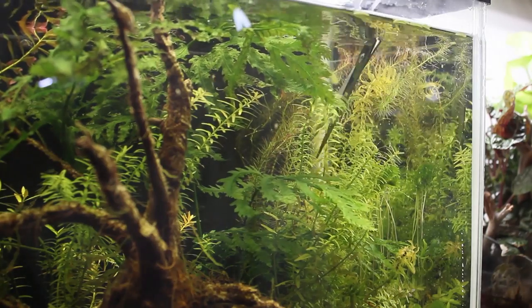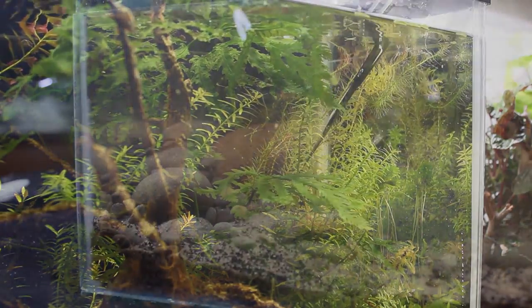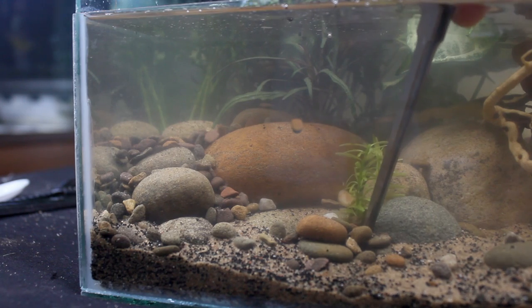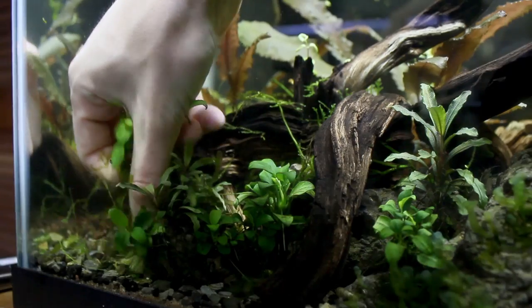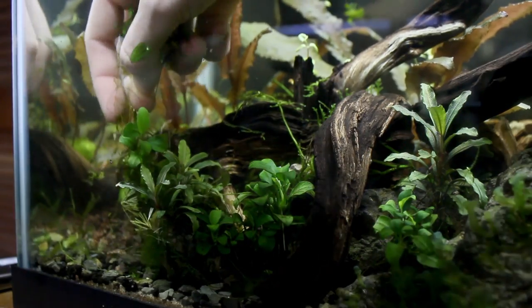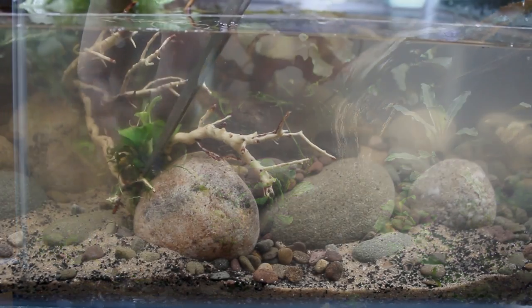To finish this off we need some plants in the water area. I trimmed a few segments of Ludwigia repens Rubin from the Blue Dream Shrimp Tank and planted them in the left side of the tank. I also pulled a few segments of Anubias nana petite from the Danio tank and nestled them in the driftwood.